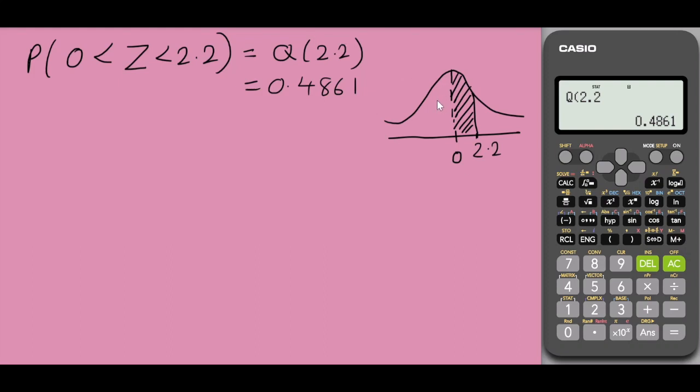Now, similarly, I could find the value of the probability from minus 3 to 0 using Q.